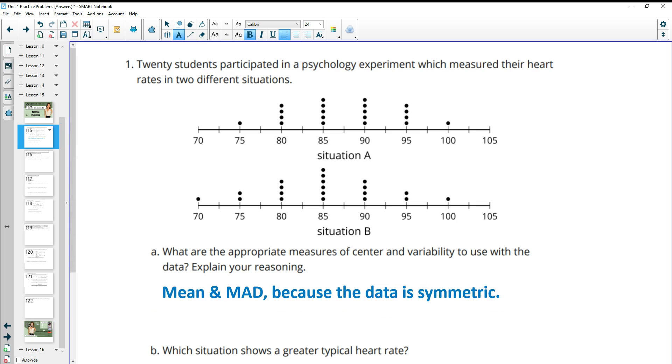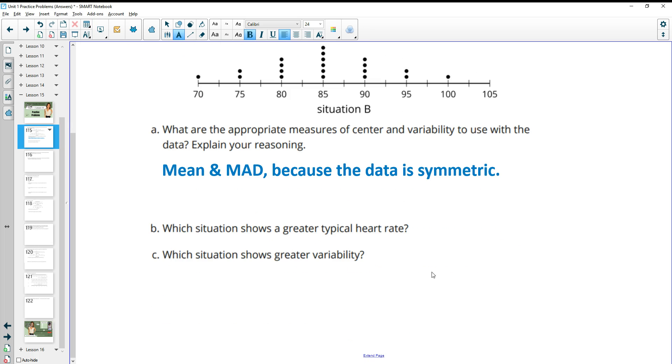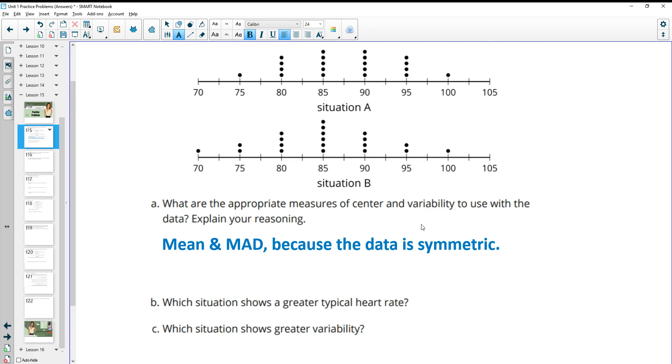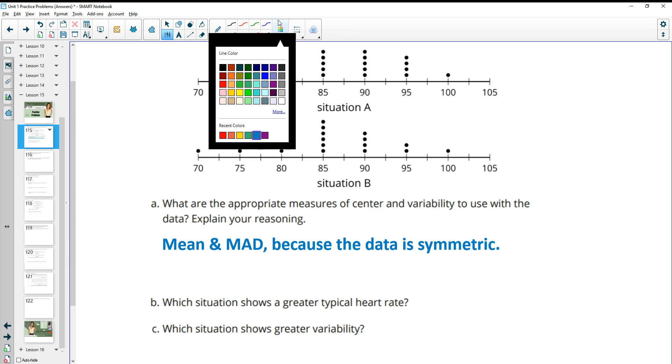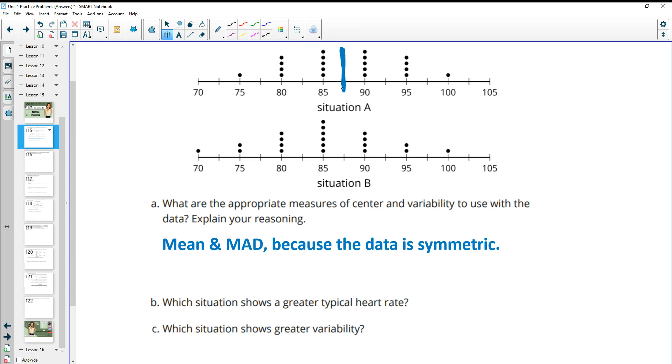And it says which situation shows a greater typical heart rate? The typical heart rate would be the mean in this case, and the mean is going to be right in the middle of these symmetric distributions. If we look here, our mean is going to be right here, right in between all the data. So this is going to be like 87.5, right in the middle of 85 and 90, where down in situation B, the middle is right here at 85.